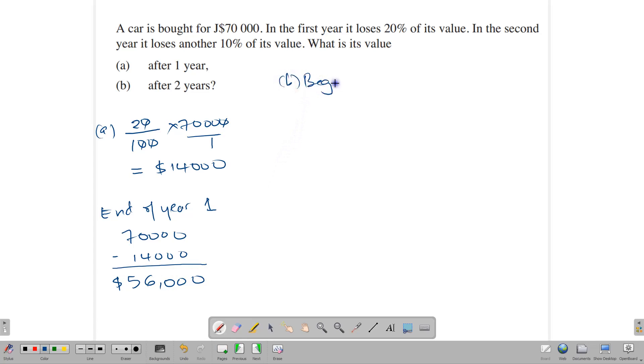At the start of year two, the car is going to be worth $56,000. Now notice that it's going to lose 10% of its value now. So we need to find 10%, not of $70,000 because it's not worth $70,000 anymore. It's worth $56,000. So we're going to find 10% of $56,000, and we end up with $5,600. So the car is going to lose $5,600 of its value in the second year, which means that at the end of year two, the car is going to be worth $56,000 minus $5,600, which is $50,400.